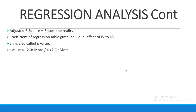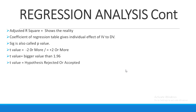The t-value should be minus two or more if you are studying a negative relationship between your variables. If your hypothesis states a positive relationship, then your t-value should be plus two or more. T-value should be bigger than 1.96. It also tells you whether your hypothesis is rejected or accepted.